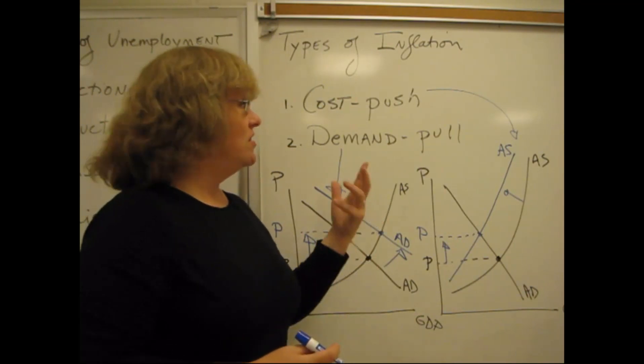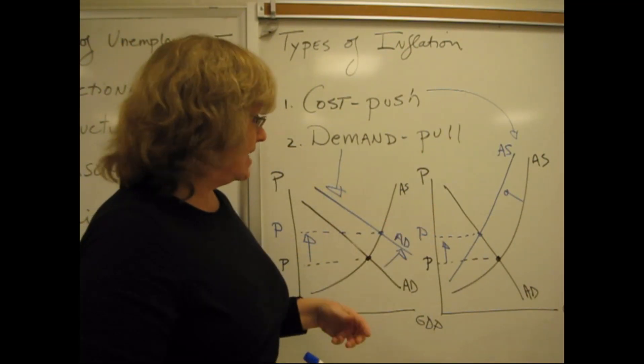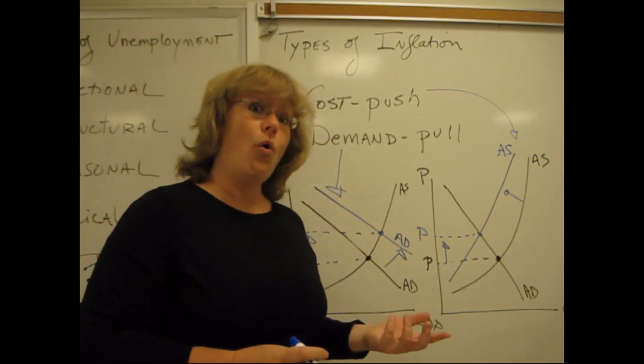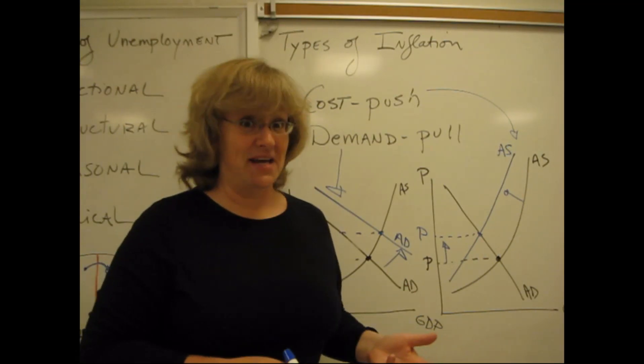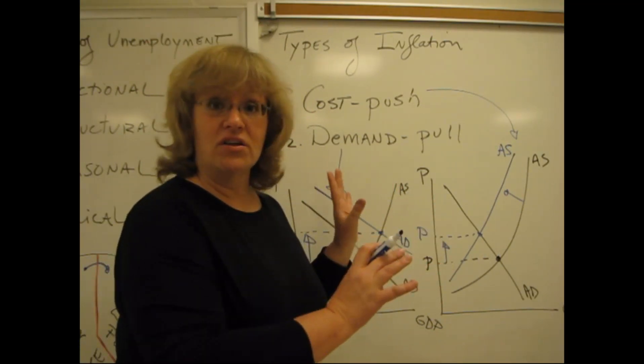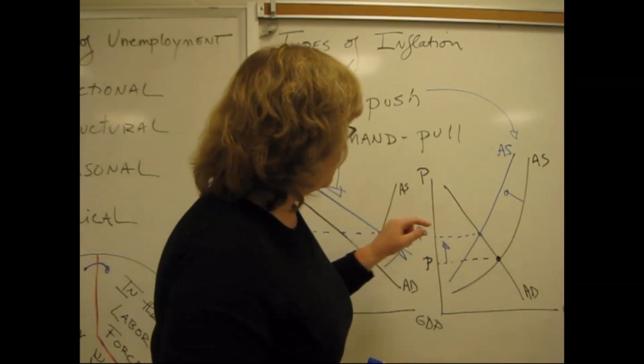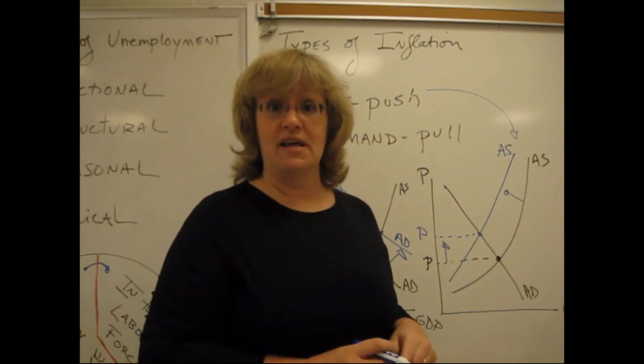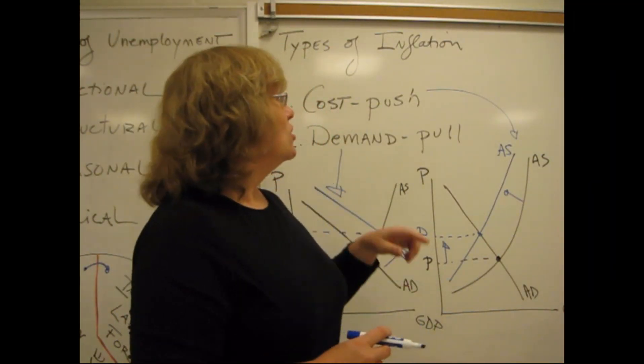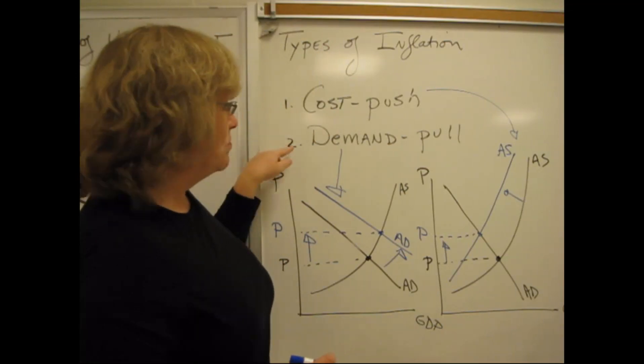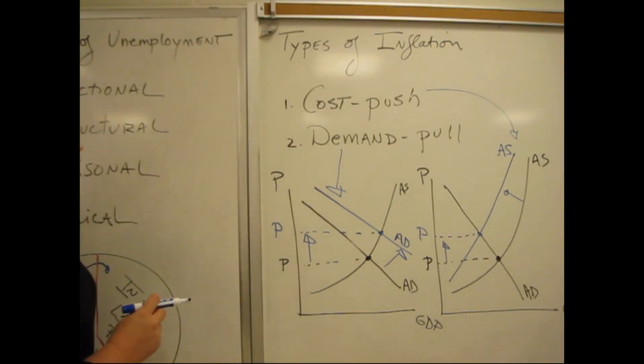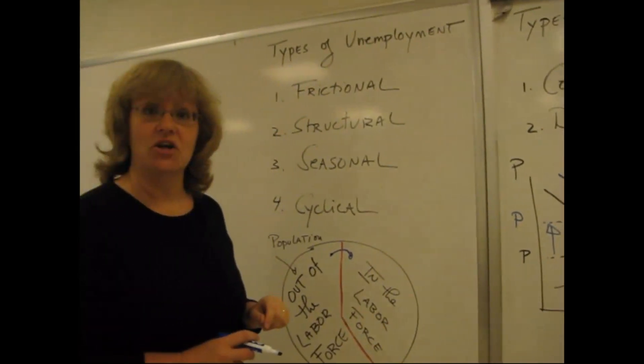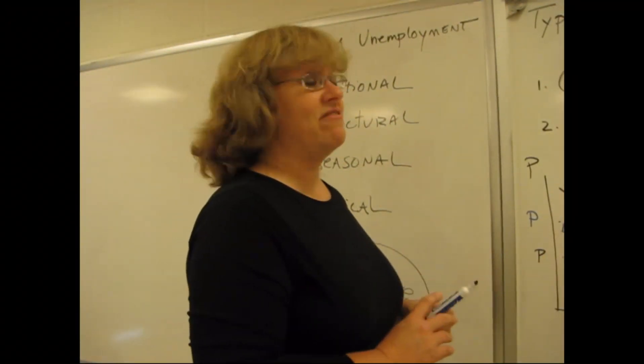You can have inflation from either the cost side of the economy, the supply side, or the demand side, or both at the same time. Nothing in our little discussion here keeps this curve and this curve from shifting simultaneously. Okay? So that's the types of inflation, cost push and demand pull, and the types of unemployment, frictional, structural, seasonal, and cyclical. Chapter 7 in McConnell.